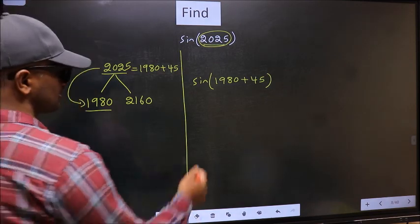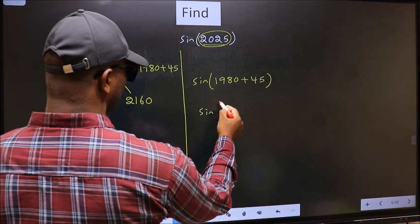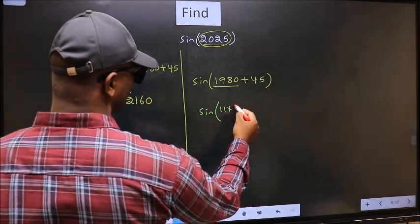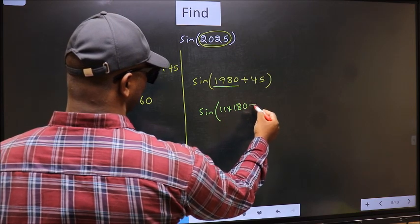Next, sine. In place of 1980, now we should write 11 times 180 plus 45.